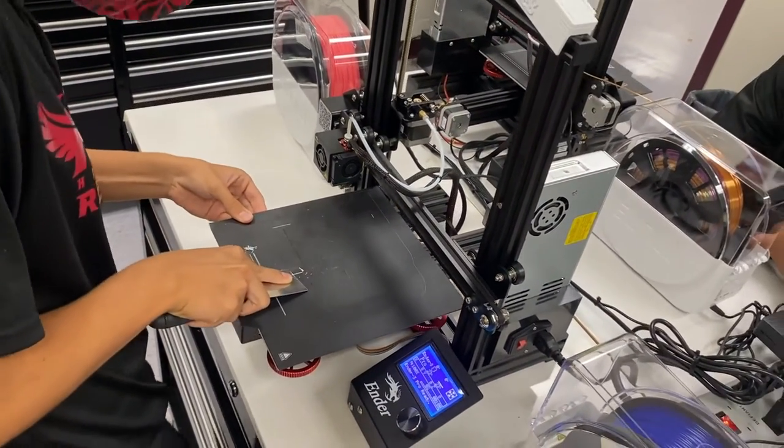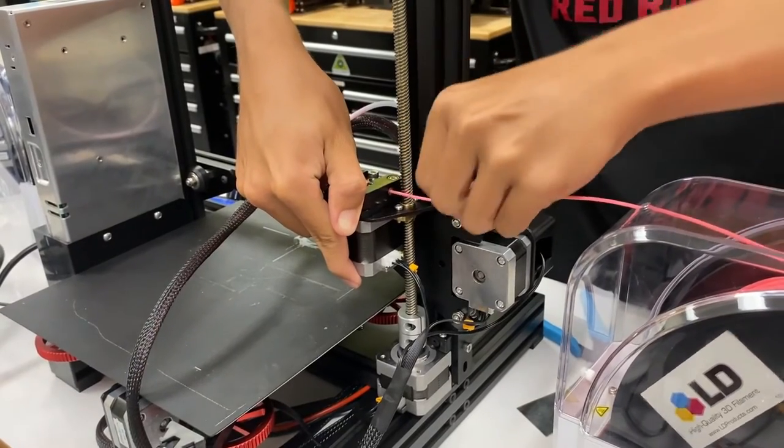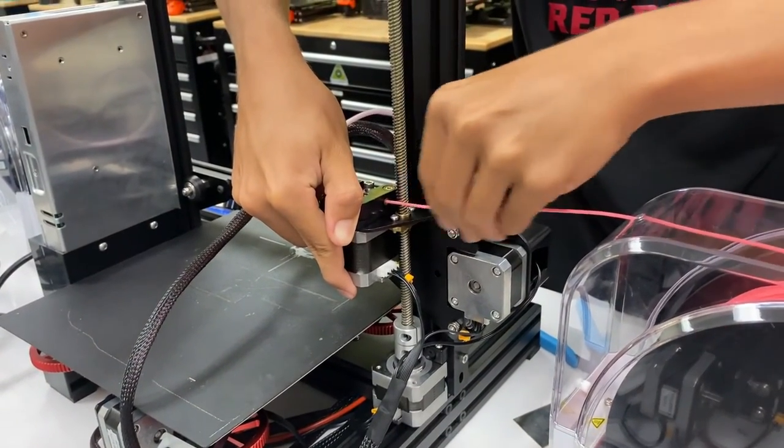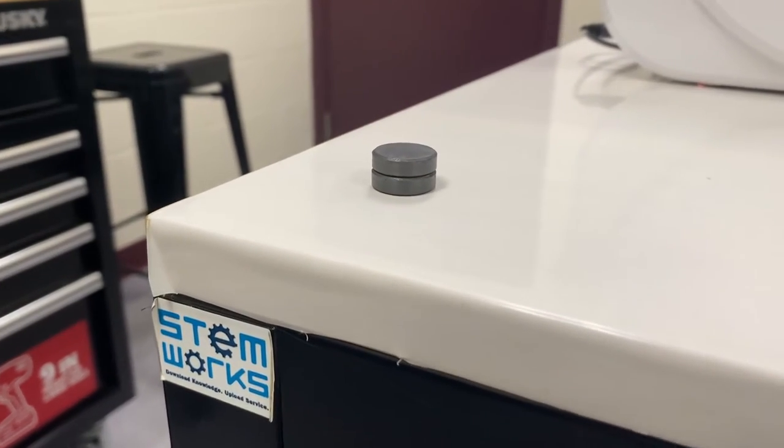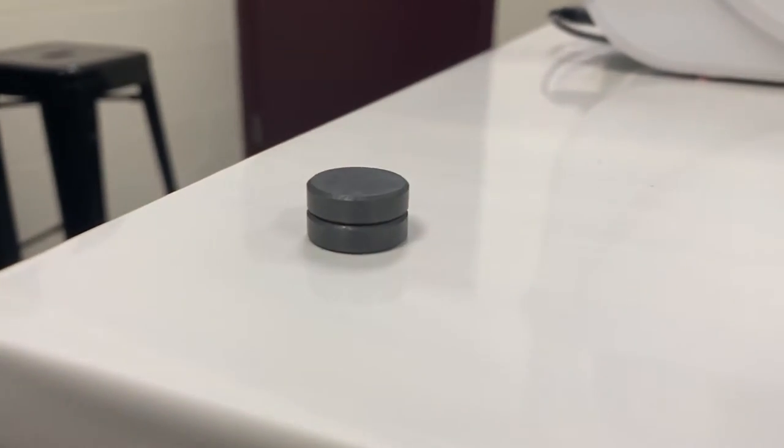After we came up with this idea, we brainstormed ways the hand could hold the mouse. We decided to use magnets. With magnets, you can pick up the mouse and move it around without having to attach a bulky build to the prosthetic and mouse.